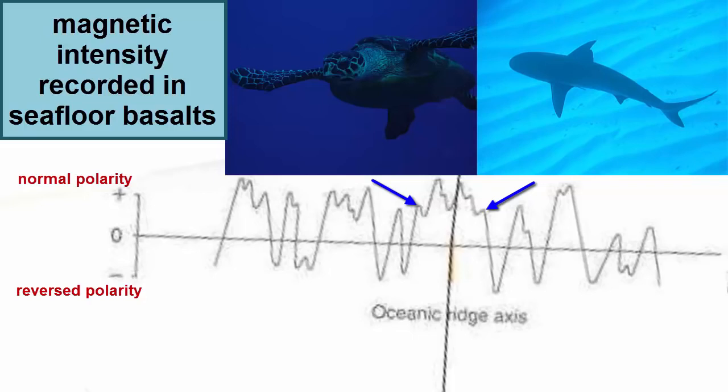And since the field decreases and then disappears before flipping, those organisms must rely on their other senses and clues more and more before they lose the field entirely. After the flip, they can easily connect the new field back to their clues and use it again, even though it's in the opposite direction. They would simply adjust, as would we.